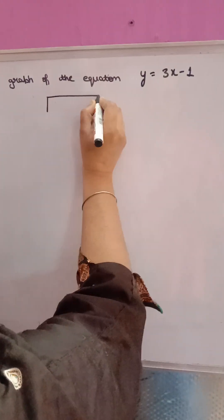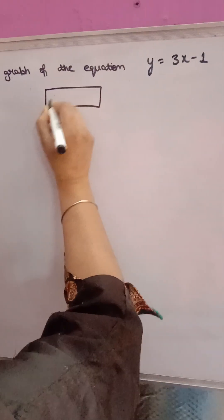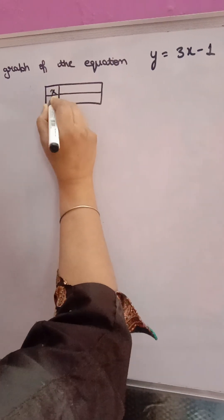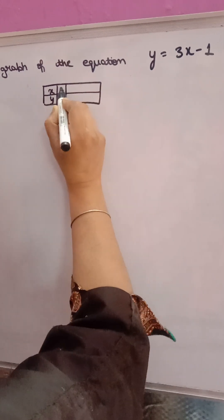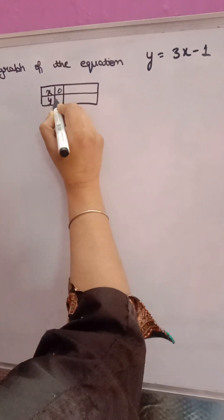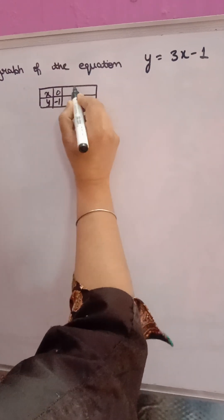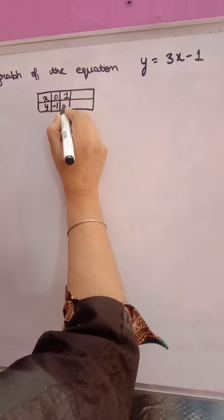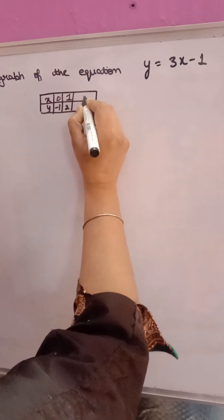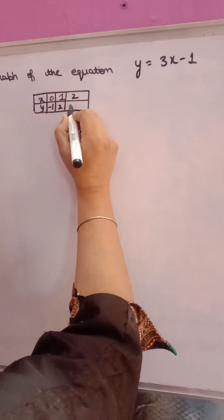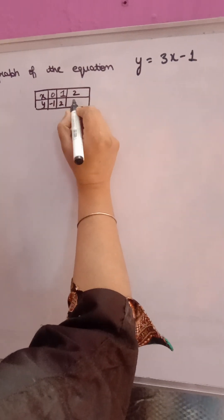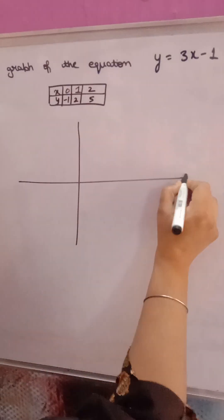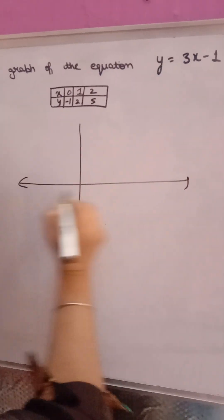First, you will make the table by giving different values of x and finding y. When x is 0, y will come minus 1. When x is 1, y will come 3 minus 1, which is 2. When x is 2, y will come 3 into 2, which is 6 minus 1, giving 5. Then you have to draw the graph.